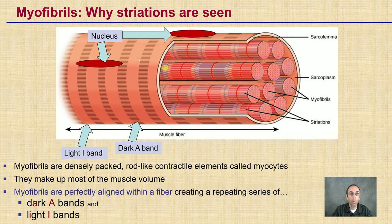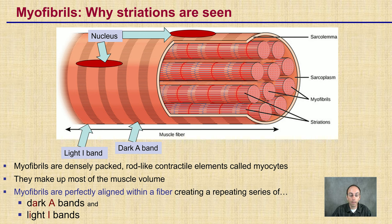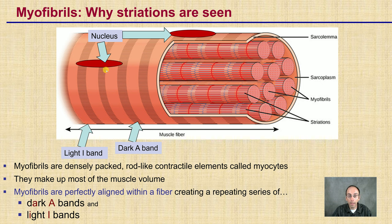Why do we see striations in our skeletal muscles? This is because the myofibrils are densely packed, and they are rod-like contractile elements called myocytes. They make up most of the muscle volume, and myofibrils are perfectly aligned within the fiber. They create this repeating series of A-bands and I-bands.